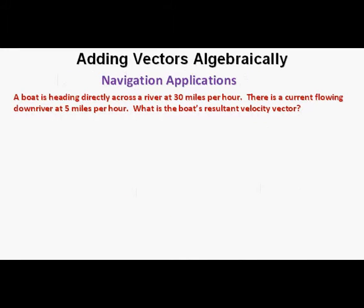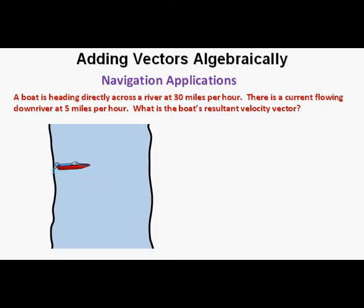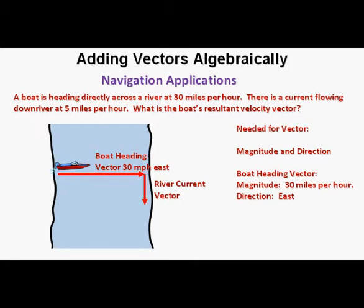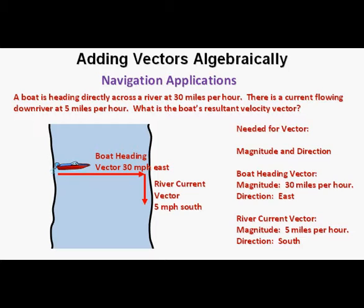Our first problem: a boat is heading directly across the river at 30 miles per hour. There is a current flowing downriver at 5 miles per hour. What is the boat's resultant velocity vector? A diagram is helpful to orient the situation. Here's the river with a boat. We are given two component vectors: one for the boat's motion and one for the motion provided by the current. The boat heading vector has a magnitude of 30 miles per hour directed eastward, and the river current vector has a magnitude of 5 miles per hour directed south, at a right angle to the boat heading vector.